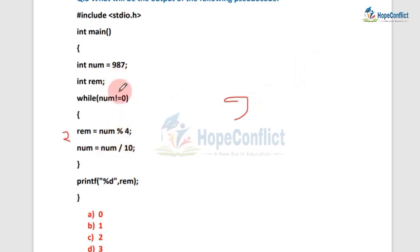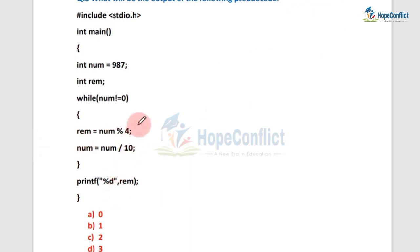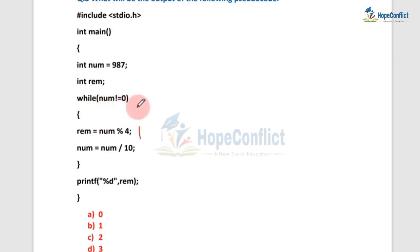Value of num is now 9. Since 9 is not equal to 0, condition is true; we execute the loop again. Remainder equals 9 mod 4, and the remainder will be 1. Then num equals 9 divided by 10 equals 0.9, which is truncated to 0. Now condition is false — 0 is not not-equal to 0 — so we skip the loop. We print remainder, and the value of remainder is 1. So the answer is 1.